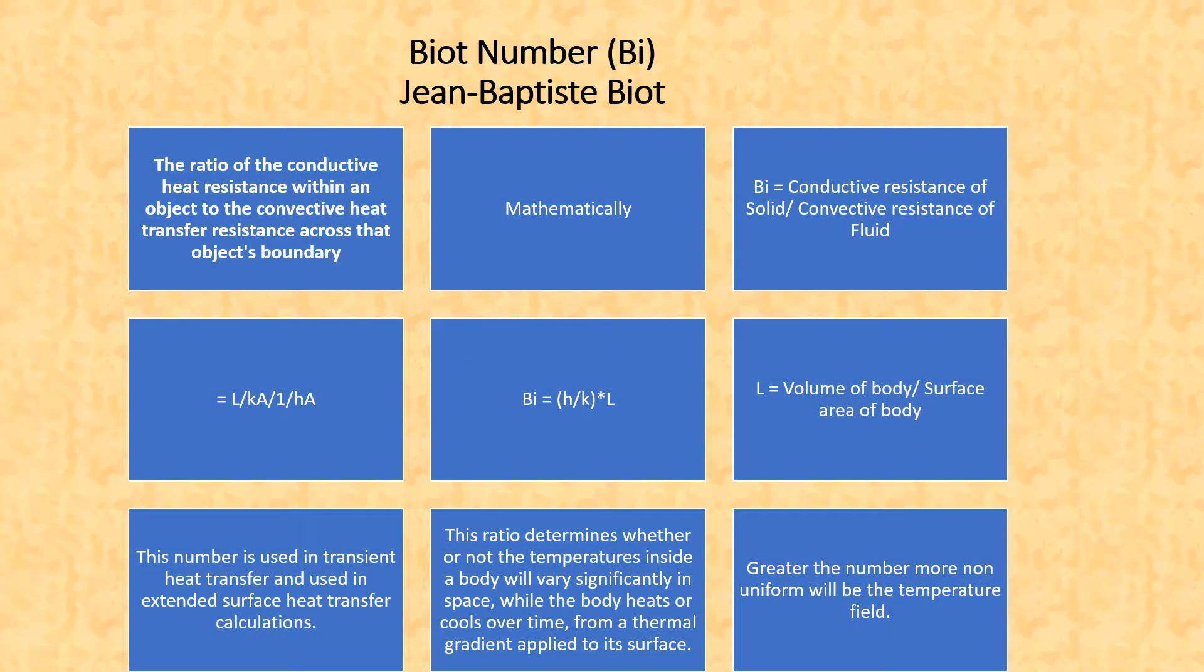Biot number is the ratio of conductive heat resistance within an object or body to that of convective heat transfer resistance across that body or at the surface of that body.